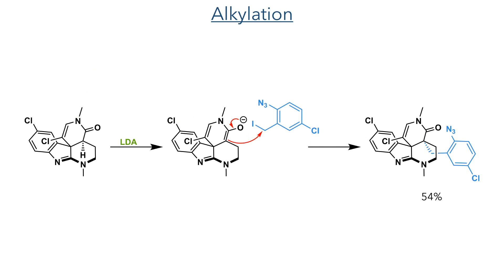With one half of the molecule now complete, the authors needed to install the other naphthyridine system. The position alpha to the lactam was once again deprotonated with LDA, and this time the enolate reacted with a benzyl iodide, forming the product in a 54% yield as a single isomer. This stereoselectivity is directed by the steric bulk of the polycyclic system present in the molecule.